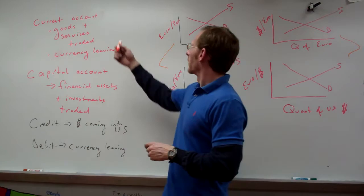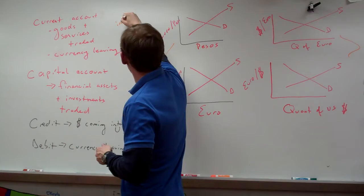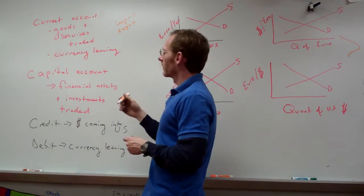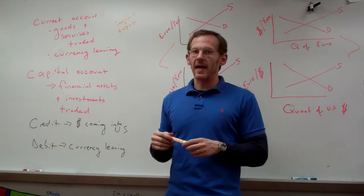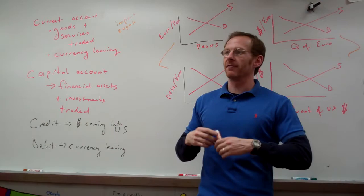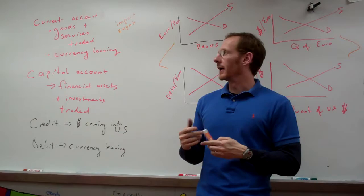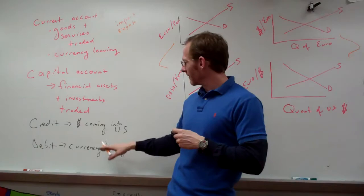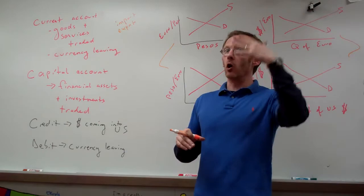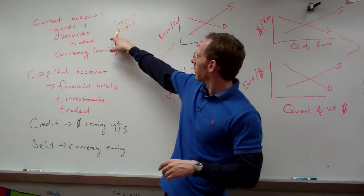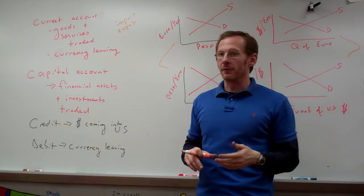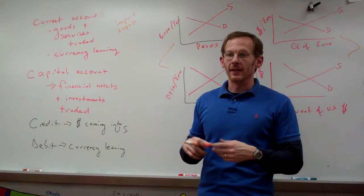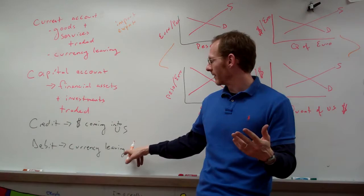Current accounts include all goods and services that are imported and exported, and any currency leaving the country. For instance, if we buy goods from Germany, our money is going over to Germany — that would be a debit in the current accounts because money is leaving. If we buy German telephones, we are giving them our money, so money is leaving as a debit, and that would be an import of goods and services.